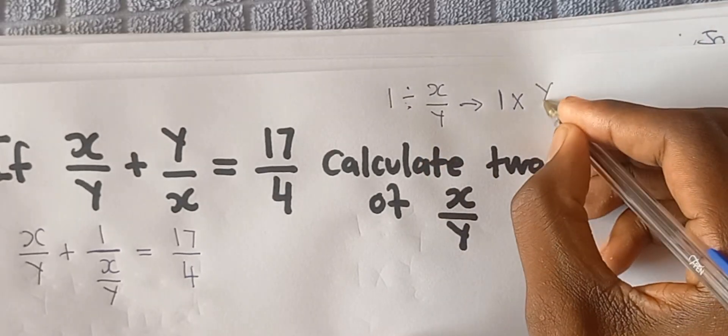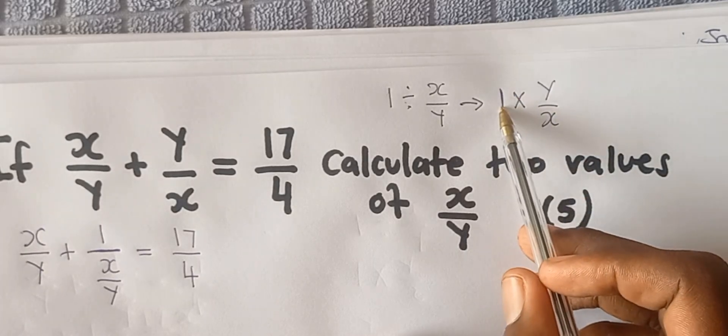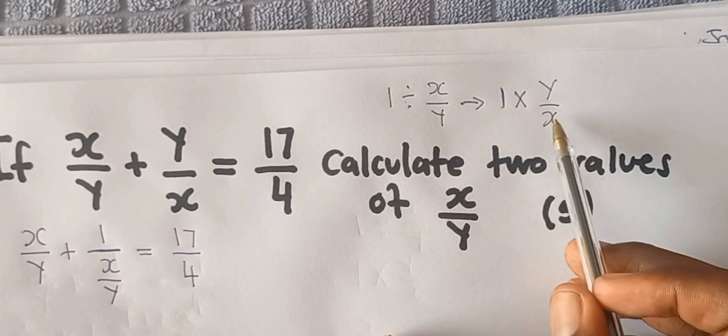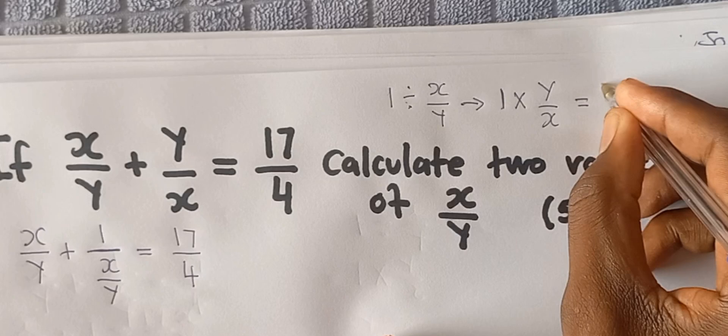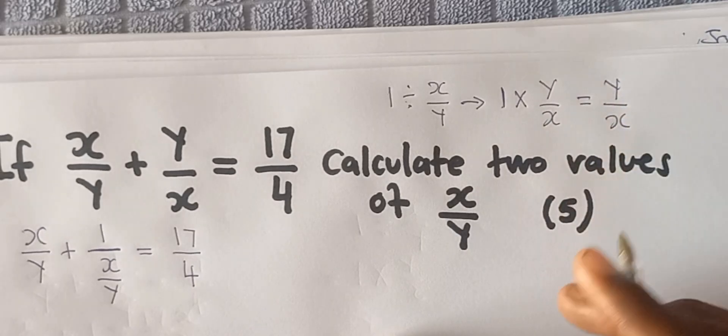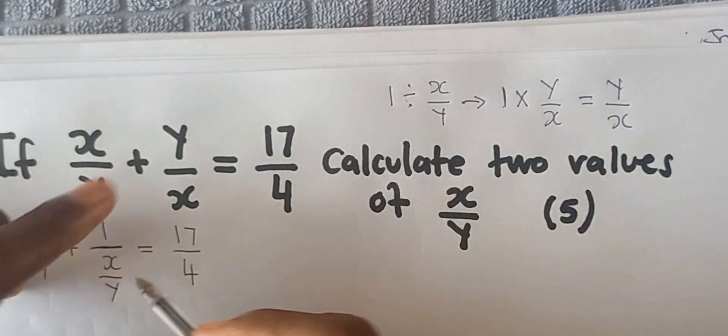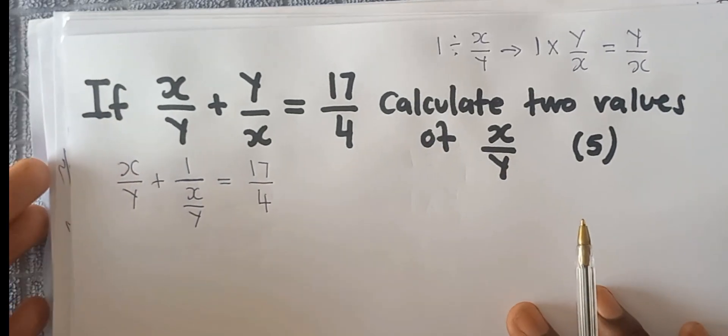When we change this, we're going to swap this fraction: the y is going to go there and x going to go there. Everything that you multiply by 1 is going to be that number or that variable, so our answer is going to be y over x. Hence this thing is still going to be the same as that one.